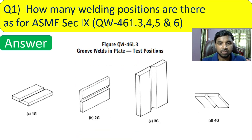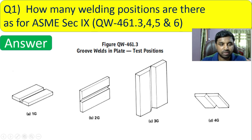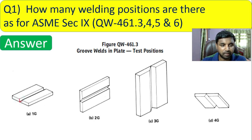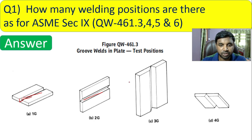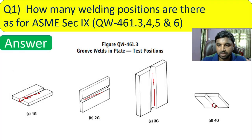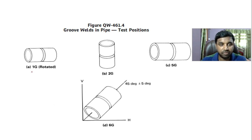The answer: in QW 461.3, groove welds in plate — there are 4 positions: 1G (flat position), 2G (horizontal position), 3G (vertical position), and 4G (overhead position). Moving to QW 461.4, groove welds in pipe also have 4 positions: 1G rotated (pipe is rotated while welding), 2G (horizontal position), 5G (fixed position, pipe not rotated), and 6G (45-degree inclined position).